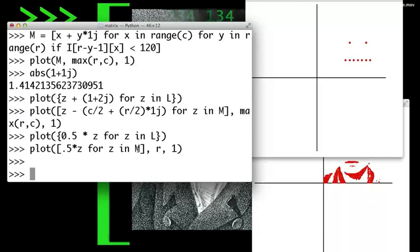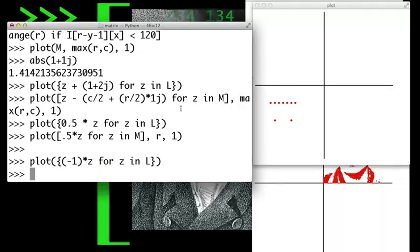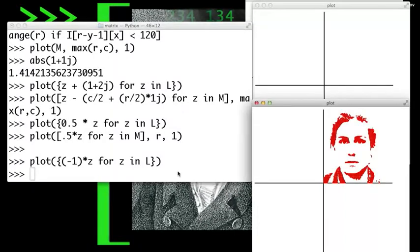Now we'll multiply each of the points in the list L by negative 1 and plot the result. And the same for the points in the list M.